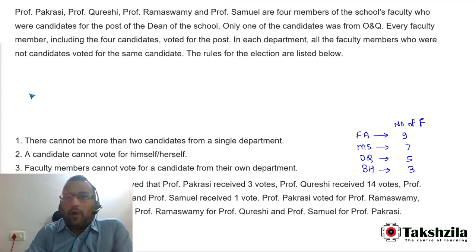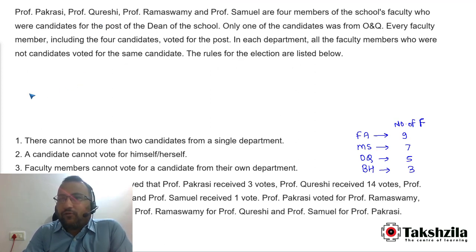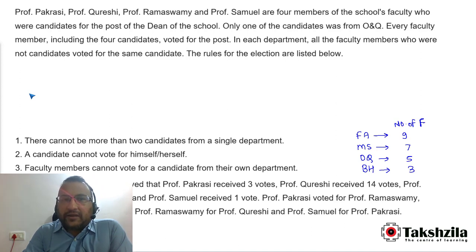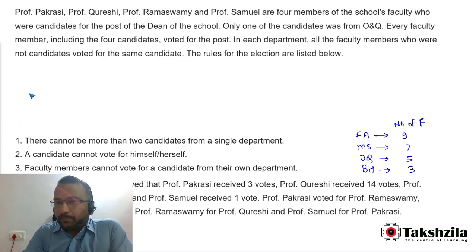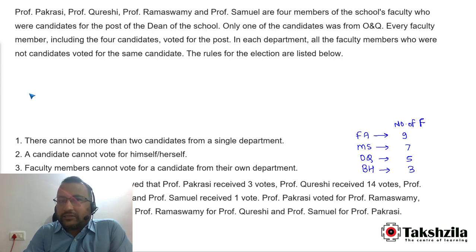Professors P, Q, R, and S are four members of the school's faculty who are candidates for the post of dean of the school. Only one candidate is from O&Q. Every faculty member including the four candidates voted for the post.